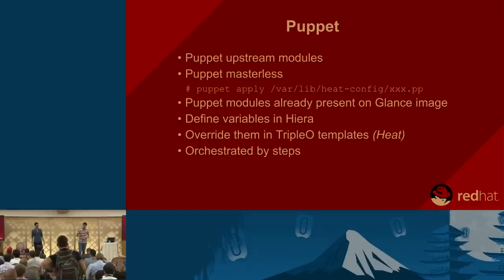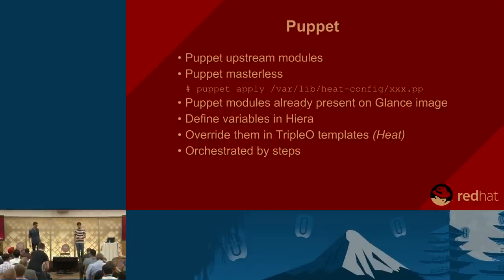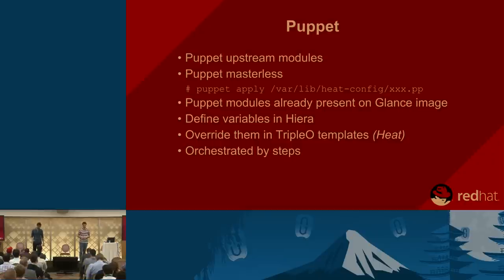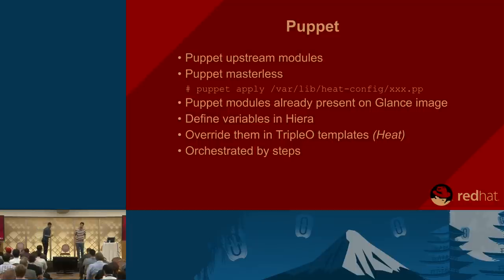Puppet orchestration is done step by step. During step one, we make sure the MySQL server is correctly set up and running before moving to step two. Step two is where database synchronization is performed for each of the OpenStack services.